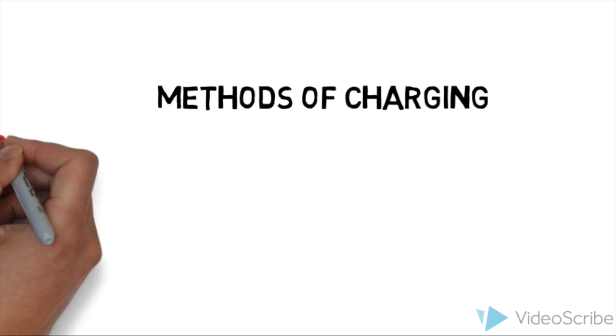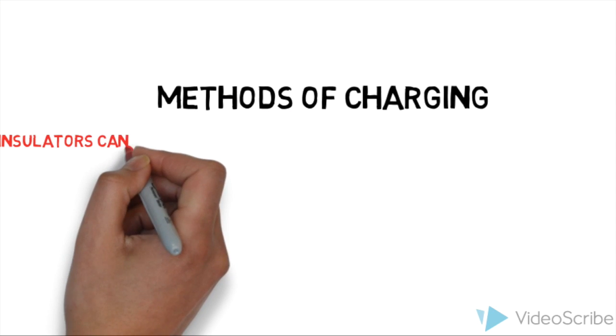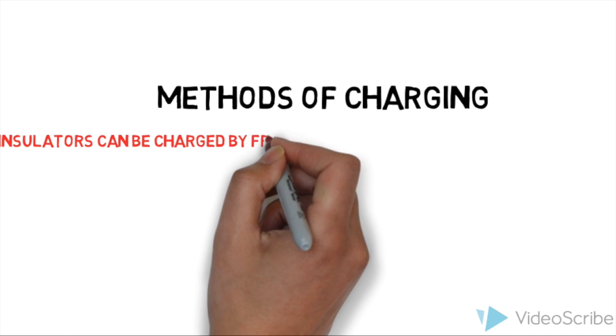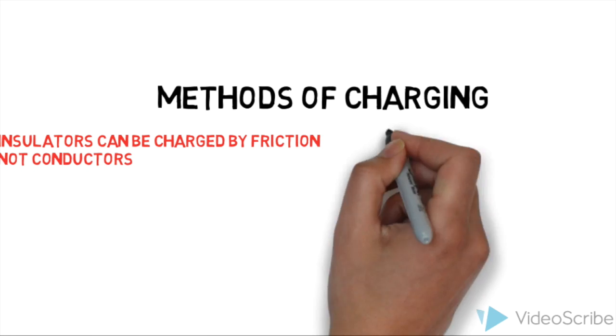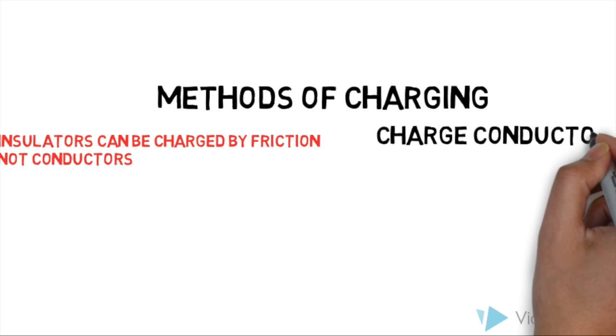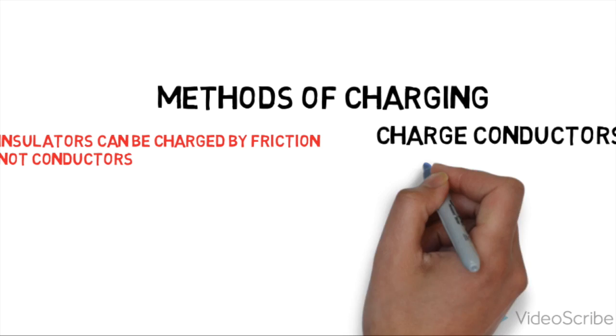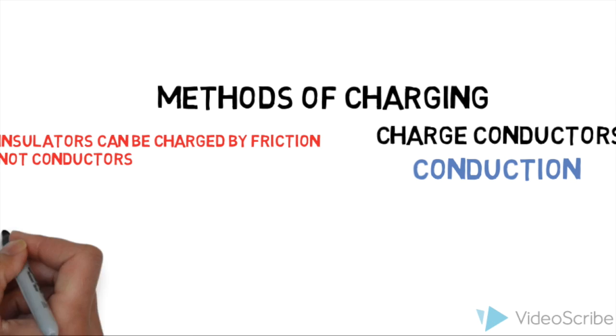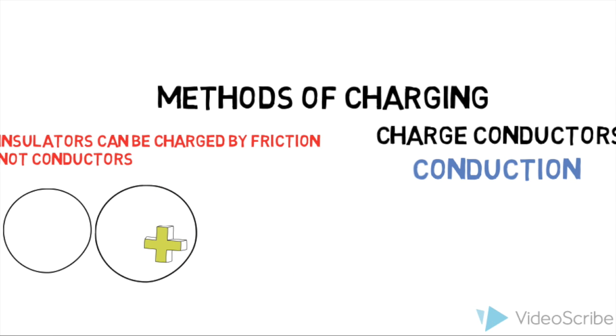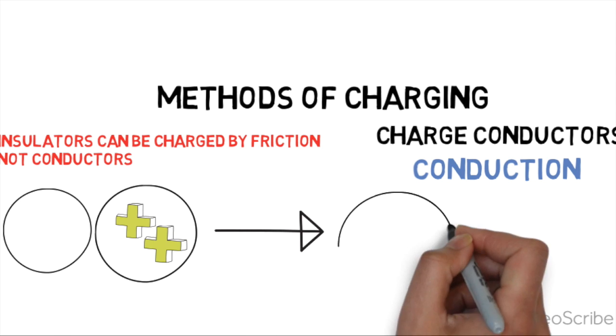Now let's discuss the methods of charging. As we observe in the silk and glass and amber and leaves, insulators can be charged by friction. Not conductors, because the charges move way too much inside the conductor. We can charge conductors by contact, called conduction. If I bring a neutral sphere near a charged conductor and I decide to touch them together, the charge distributes throughout both spheres, the charges share. This is not the case for insulated materials.